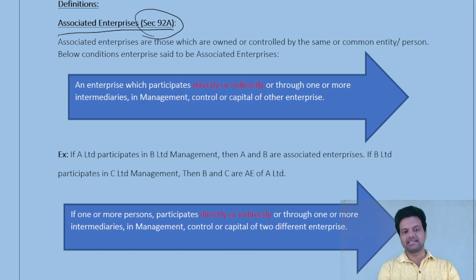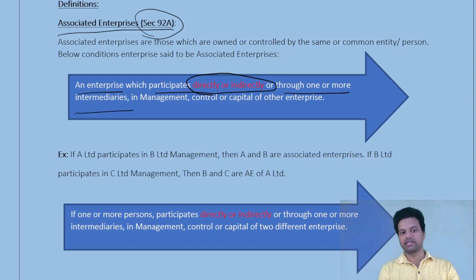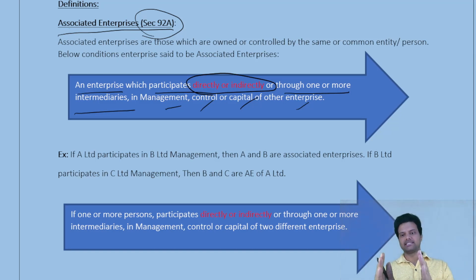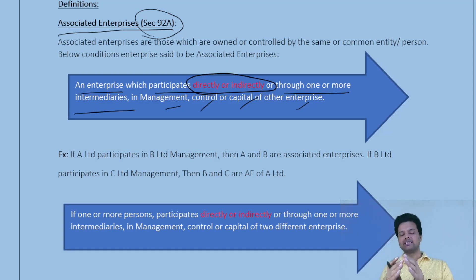The definition says that an enterprise which participates directly or indirectly, or through one or more intermediaries, in the management, control, or capital of another enterprise — then both enterprises are said to be associated enterprises.